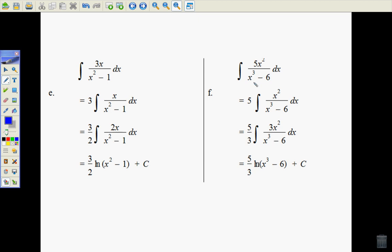And 5x squared over x cubed minus 6. Well, I'll take the 5 out, because really I want this 3x squared. But I multiply by 3, divide by 3. We've seen that.